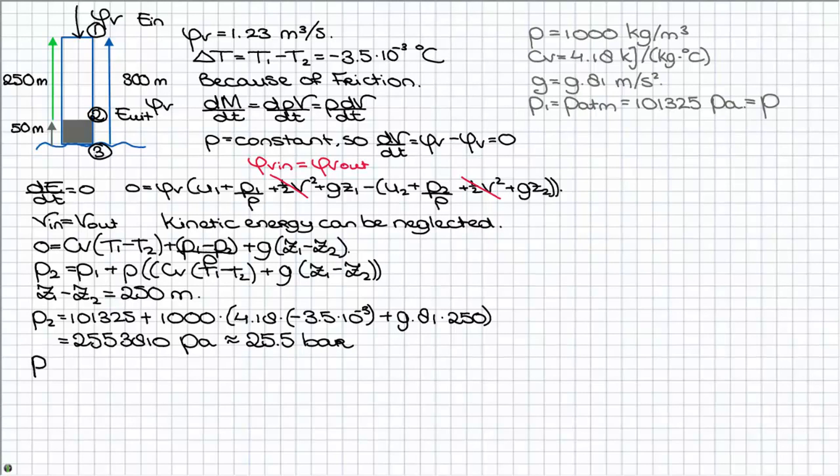To determine the electrical power of one generator we first have to determine the electrical power of one pipeline. This is the volume flow multiplied by the pressure difference between the in and outlet of the generator.